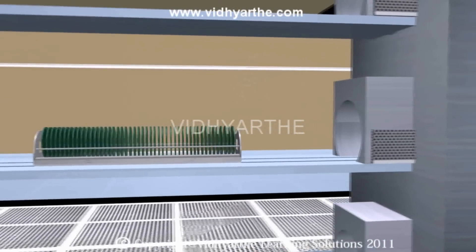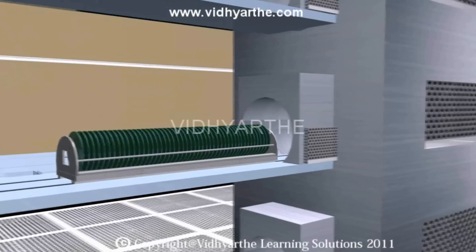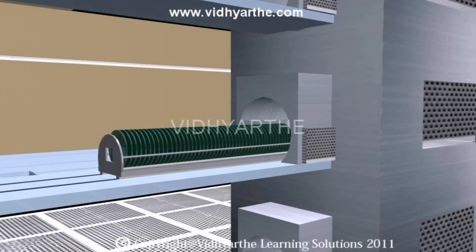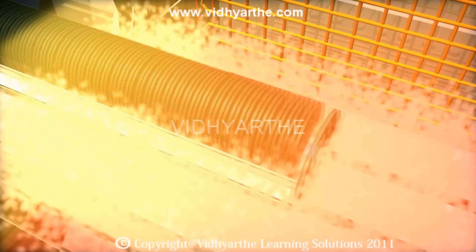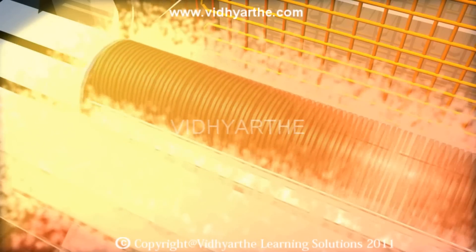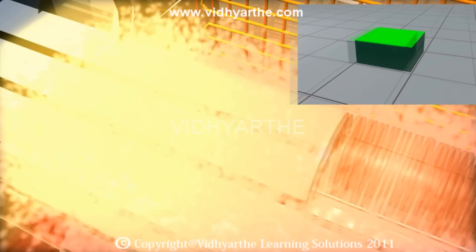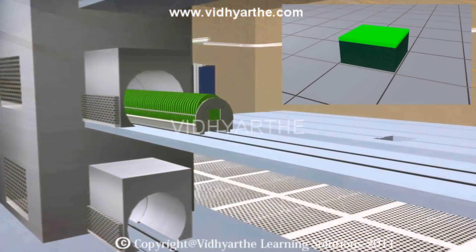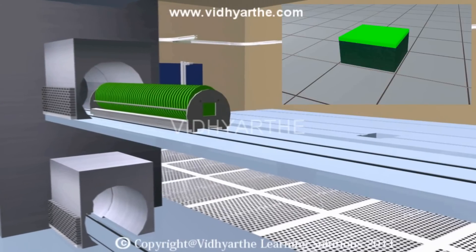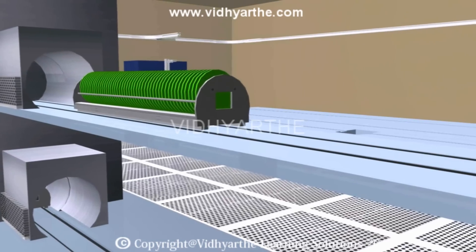The second step in the fabrication process is called thermal oxidation. In this step, the pure silicon is oxidized at very high temperatures to form a thin layer of silicon dioxide, which is nothing but the gate oxide layer of the transistor.